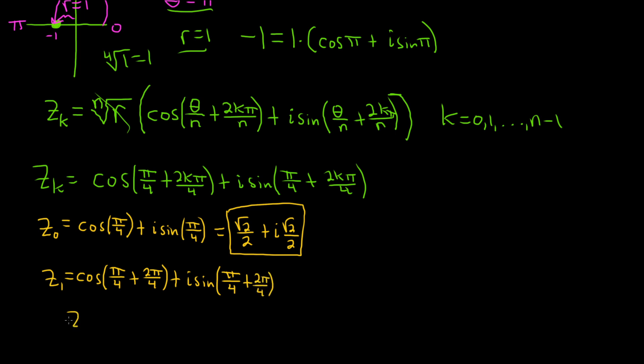So z sub 1 is the cosine of 3 pi over 4 plus i sine of 3 pi over 4. And 3 pi over 4 is in quadrant 2, right? Because this is pi, which is 4 pi over 4. So the angle that has a reference angle of pi over 4 that's here is 3 pi over 4.